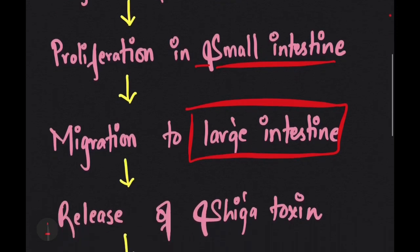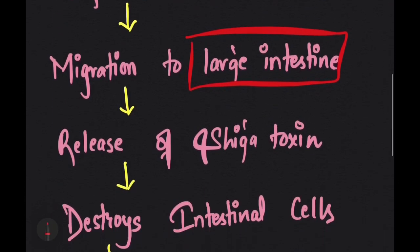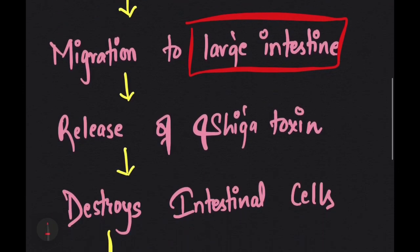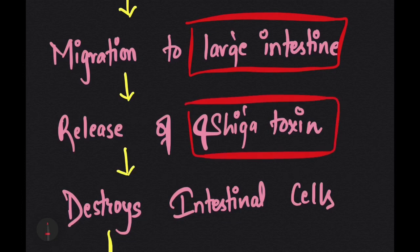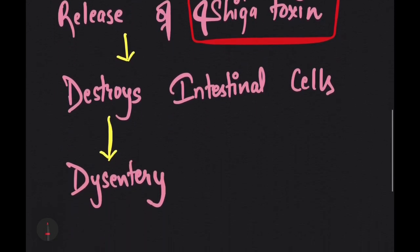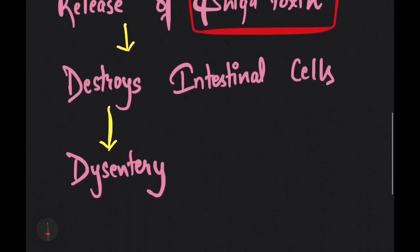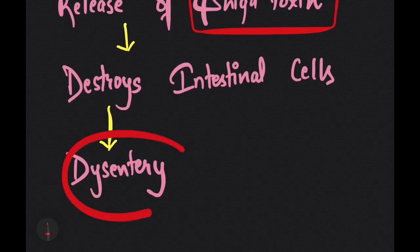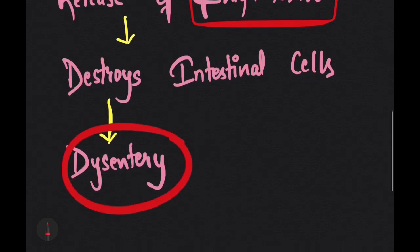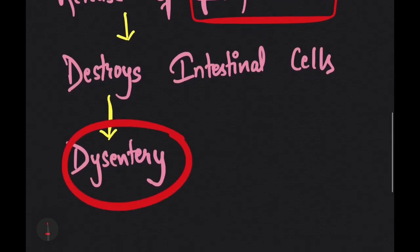In the large intestine, multiplication of bacteria occurs. They release various virulence factors including the Shiga toxin, which is one of the most potent toxins of Shigella. This toxin ultimately destroys intestinal cells and leads to dysentery.